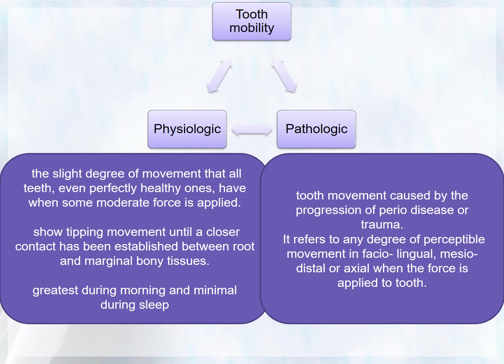There are two different stages of tooth mobility: the initial stage and the secondary stage. The initial stage is the intra-socket stage, where the tooth moves within the confines of the periodontal ligament. The secondary stage occurs gradually and entails deformation of alveolar bone in response to increased horizontal forces.